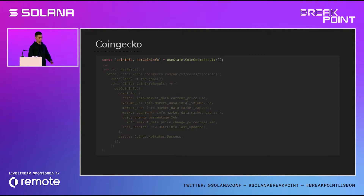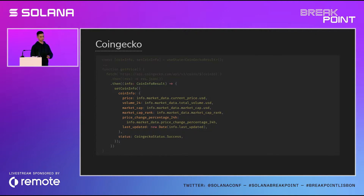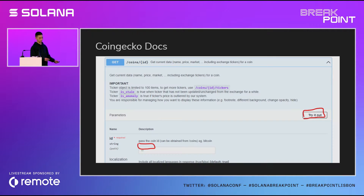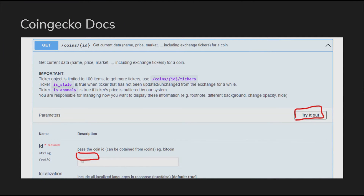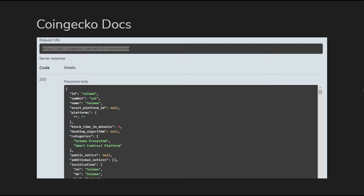Because we are using React, we create the state and set the response to our state. To know the structure of the response body, we can use console log, or we can go directly to the CoinGecko documentation. It's very easy — you search the API, try it out, insert the required parameters, run the API, and you get the response right there on the CoinGecko page, where you can choose what data you want to use.